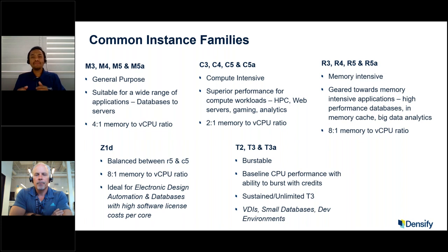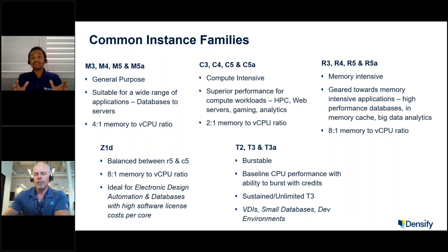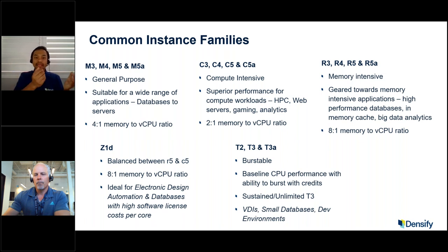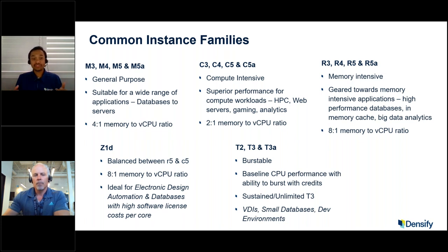On the other side of the spectrum, what if you have a memory-intensive application — high-performance databases, in-memory cache, in-memory analytics, or big data analytics? We recommend R3, R4, R5, or R5A. These have an 8-to-1 memory-to-vCPU ratio. If you want both compute and memory, the Z1D provides a good balance between R5 and C5 capabilities, with an 8-to-1 memory-to-vCPU ratio. Customers use it for electronic design automation or databases with high software license costs per core.